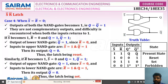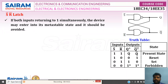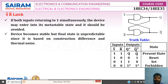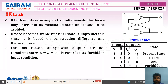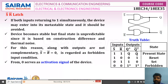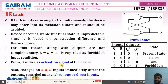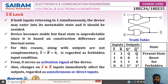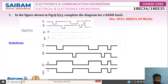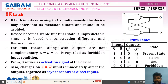Because the outputs are not complementary and the device may enter a metastable state when both return to 1 simultaneously, this is regarded as a forbidden input condition. From the truth table: R-bar=0 means reset state, S-bar=0 means set state — so 0 serves as the activation signal. Also, S-bar and R-bar are asynchronous or direct inputs. We'll continue in the next video. Thank you.